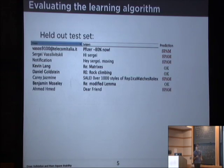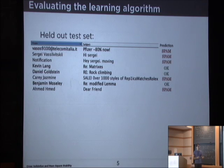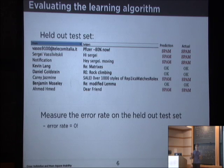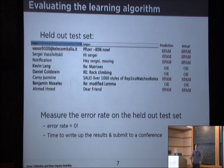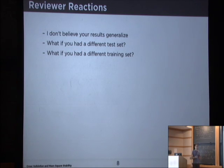One of the questions is how do you evaluate the learning algorithm that you have? The usual scenario is you have some holdout test set. Here's another sample from the mailbox where we ask the hypothesis to label whether these are spam or not spam. Then we check with the labels that we had. And our error is zero — we're doing perfectly. So of course, the next step is to write this up and submit to a conference. We wait about three months, and the reviewers come back and say they don't believe you. They say, what if you had a different test set? What if you had a different training set? Prove to me that this works.